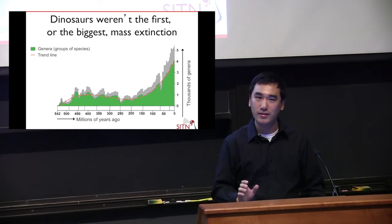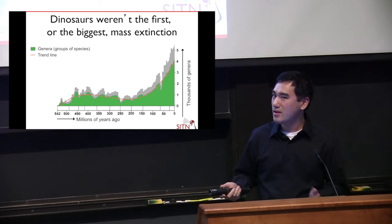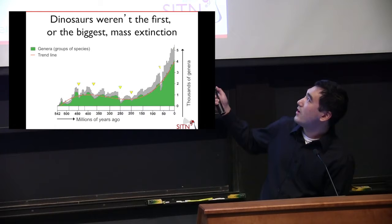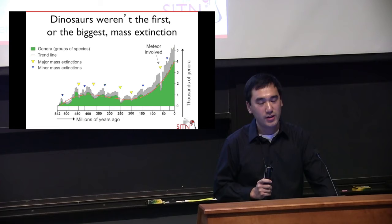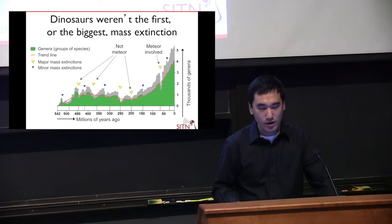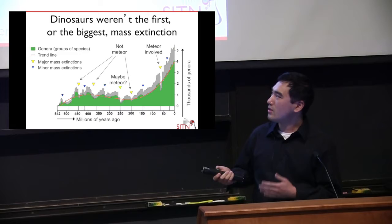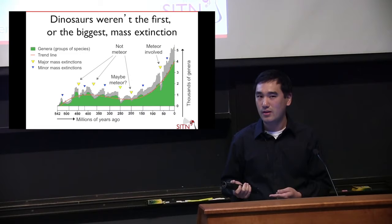I use 'minor' as a relative term — if you were living during them, it would have been pretty awful. One thing I want to point out is that the dinosaurs going out wasn't the first major mass extinction event. That mass extinction event happened right here, and that's the only one for which we really think a meteor was involved. For the other four major mass extinction events, we're no longer seriously entertaining the idea that a meteor was a major contributor — something else had to have done them.